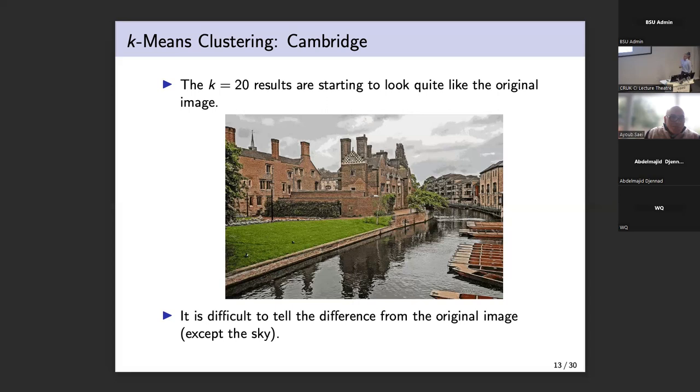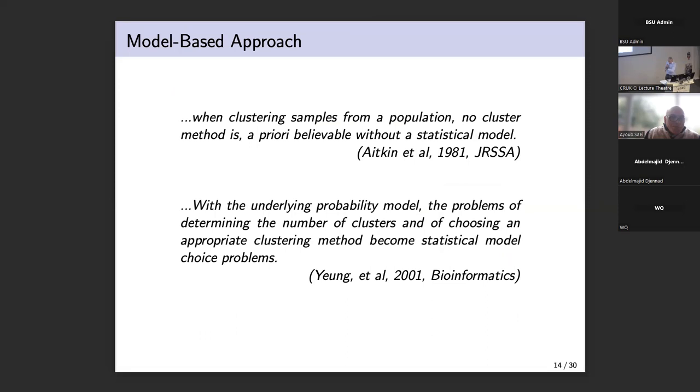I tend to work on cluster analysis methods that are based on statistical models. So rather than being algorithmic, all the methods I talked about so far, at least initially, look like they're algorithmic. Their statistical properties have been studied extensively, and we have some idea about what models they roughly correspond to when we're fitting them. There's two nice quotes that I tend to use when I'm trying to explain the model based clustering approach.